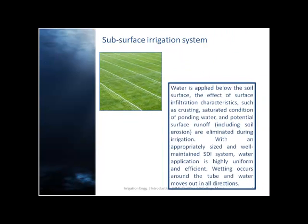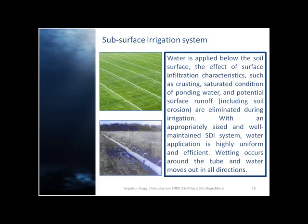Subsurface irrigation system: water is applied below the soil surface. The effects of surface infiltration characteristics such as crusting, saturated condition of soil, and potential surface runoff are eliminated during irrigation with an appropriately sized and well-maintained SDI system. Water application is highly uniform and efficient.